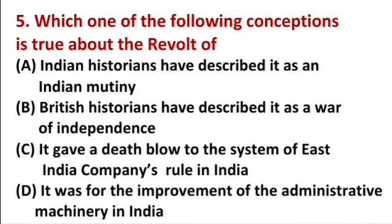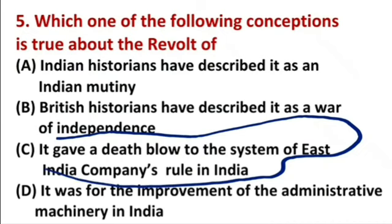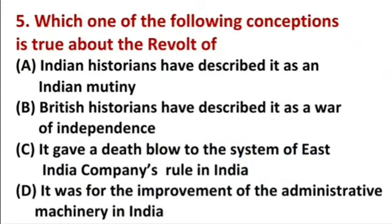Which of the following conceptions is correct about the Revolt of 1857? Indian historians have described it as an Indian mutiny; British historians have described it as a war of independence; it was a death blow to the system of East India Company's rule in India; or it was for the improvement of administrative machinery in India. The answer is: it was a death blow to the system of East India Company's rule in India.